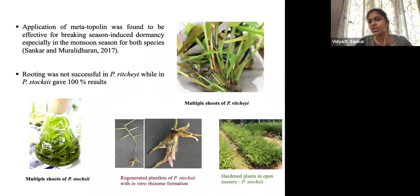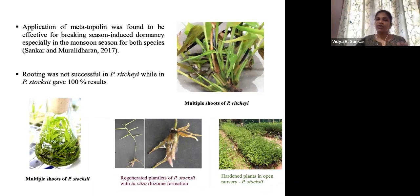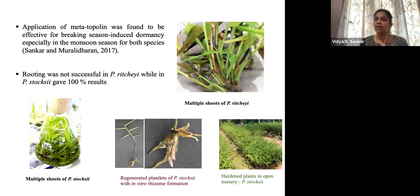We enhanced the multiplication rate of ritchiei using a relatively new cytokinin, metatopolin. We tried many cytokinins and combinations of cytokinin with auxins for enhancing the multiplication rate. But in most experiments, there was no significant increase in multiplication rate. Then we tried this new cytokinin, metatopolin, and found a very better result with the species. However, when we went to the rooting experiments, stocksii gave a 100% result with root induction protocols, but ritchiei never responded or showed only some indications of root induction without progressing to the next step.